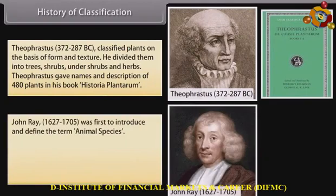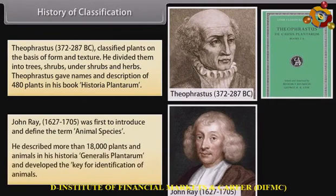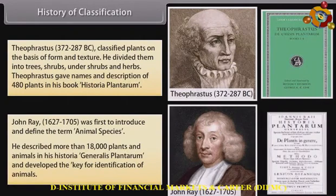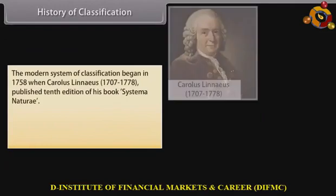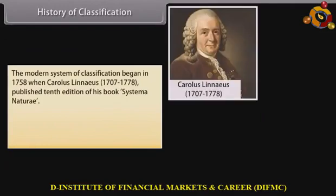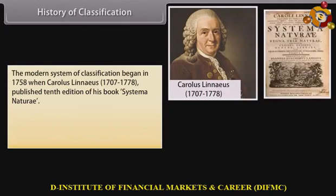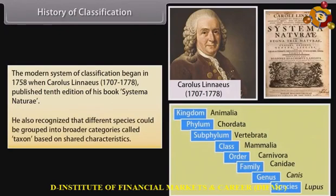John Ray (1627–1705) was the first to introduce and define the term animal species. He described more than 18,000 plants and animals in his Historia Generalis Plantarum and developed the key for identification of animals. The modern system of classification began in 1758 when Carolus Linnaeus (1707–1778) published the 10th edition of his book Systema Naturae. He also recognized that different species could be grouped into broader categories called taxon, based on shared characteristics.